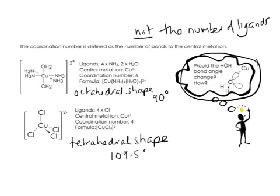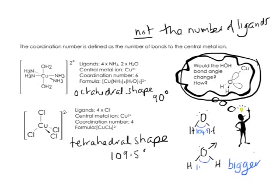Consider this question: would the bond angle in a water molecule be different when that water molecule is acting as a ligand? Think about how you work out a bond angle, and whether it's changed — and if it has, has it got bigger or smaller? The bond angle in a water molecule is 104.5 degrees because it has two bonding pairs and two lone pairs around the central oxygen. When water behaves as a ligand, you now have three bonding pairs and one lone pair, so the bond angle will have got bigger — it will be approximately 107 degrees.